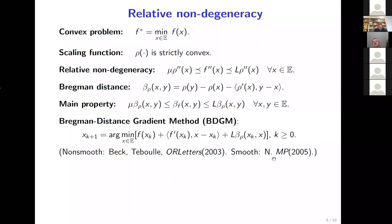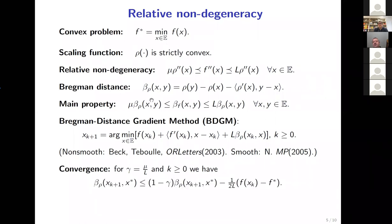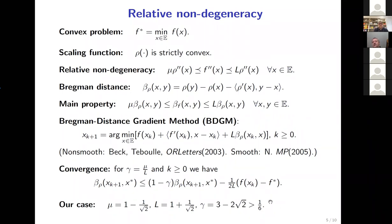The Bregman distance gradient method minimizes at each iteration the linear model plus the Bregman distance term with constant L, giving an upper bound on the objective at the next point. I first saw this scheme for non-smooth optimization in a paper by Breg and Teboulle (2003). The most important application here is relative non-degeneracy, which gives linear convergence depending only on the condition number mu and L of the scaling function. In our case mu and L are constants, so the condition number is a constant and convergence is very fast.